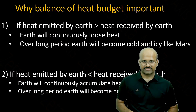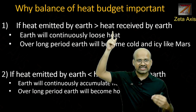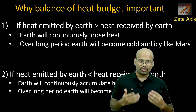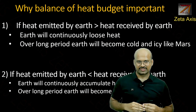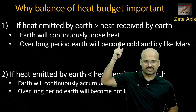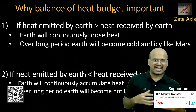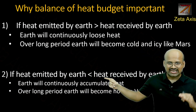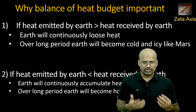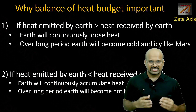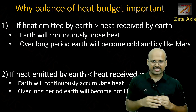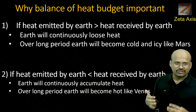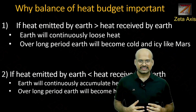This heat budget is critically important. If the heat emitted by Earth were greater than the heat received, Earth would continuously lose heat and over a long period become cold and icy like Mars. Conversely, if the heat emitted were less than heat received — meaning Earth stores radiation — it would continuously accumulate heat and become hot like Venus.